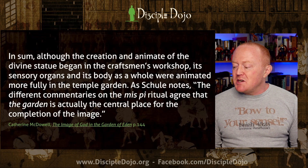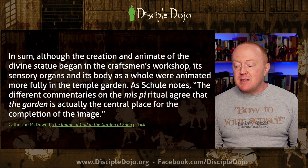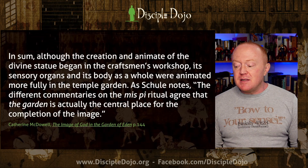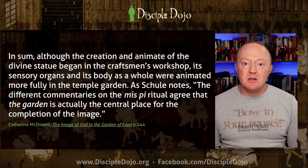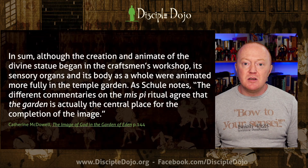McDowell notes that although the creation and animation of the divine statue began in the craftsman's workshop, its sensory organs and body were animated more fully in the temple garden. As she notes, the different commentaries on the mis pi ritual agree that the garden is actually the central place for the completion of the image. The image was not the full image of the god until it was completed in the garden, with its mouth opened to receive the offerings.